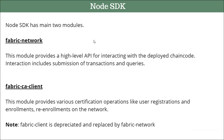You will use these APIs going forward to interact with your network, and mainly with your chaincode functions. For example, if you have to call an 'add property' chaincode function, fabric-network will help you achieve that. If you want to query all the properties, that can also be achieved with this module. It helps you to do all kinds of transactions and interactions with the deployed chaincode.